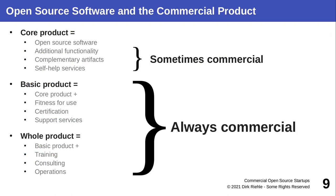When you look at what software vendors sell, recall the model from the first part of this course: core, basic, and whole product. The open source part is always part of the core product — that's the only thing that's open source. There may be added functionality or complementary artifacts and services, some provided for free and some you pay for. Everything beyond that — the basic product, guarantees, certification, training, consulting, or operations in the cloud — is always commercial, always to pay for.